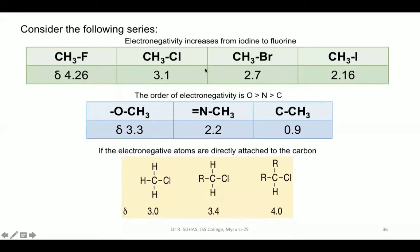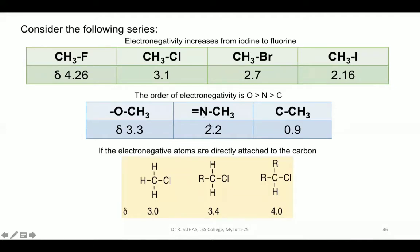For other electronegative elements: protons near oxygen (most electronegative in this series) show delta of 3.3; near nitrogen, 2.2; near carbon (least), 0.9. The order of electronegativity is oxygen > nitrogen > carbon. When electronegative atoms are directly attached to carbon, as in chloromethane (delta 3.0), replacing hydrogens with R groups further increases the delta value. Also, as the number of electronegative atoms on a carbon increases, the chemical shift value increases — for example, CHCl₃ has more delta shift than CH₂Cl₂ which is more than CH₃Cl.